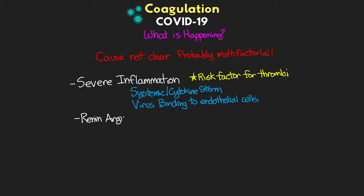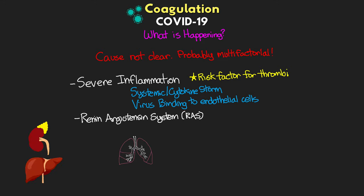Another contributing issue could be related to the renin-angiotensin system, or RAS — technically part of the RAAS, though aldosterone isn't relevant here. To understand this, here's a quick overview: in normal pathophysiology, low blood pressure causes the kidneys to release renin. The liver produces a peptide precursor called angiotensinogen, and renin acts on that to produce angiotensin 1. In our lungs, we have two important enzymes: angiotensin converting enzyme (ACE) and angiotensin converting enzyme 2 (ACE2).